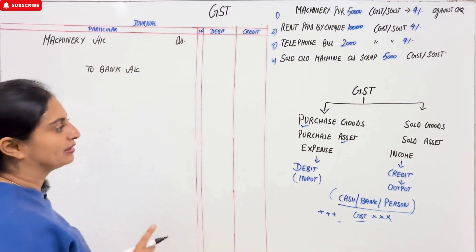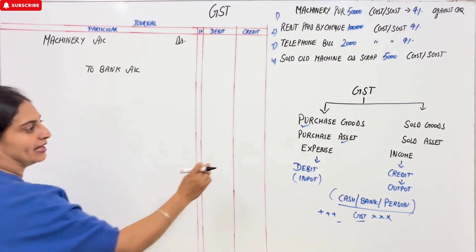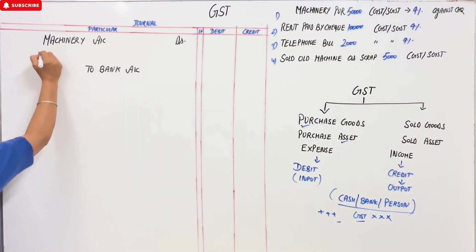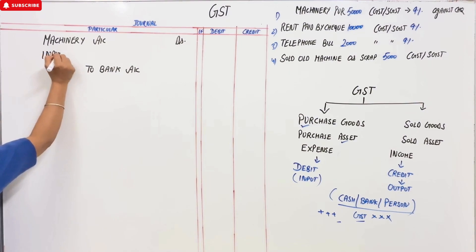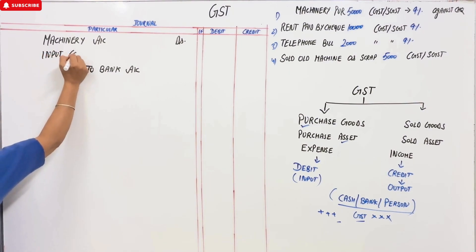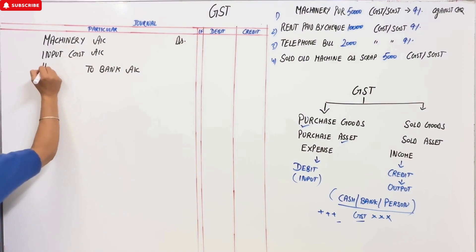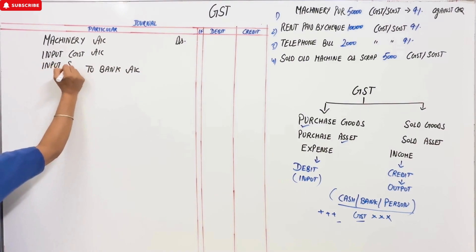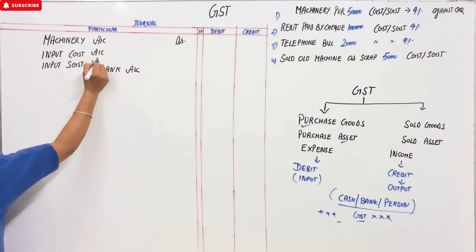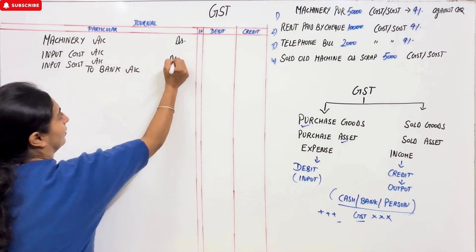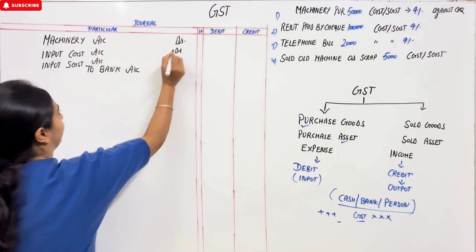Since it is a purchase, GST goes to input in debit. So we also write: Input CGST Account — Debit, and Input SGST Account — Debit. The complete entry is: Machinery Account Debit, Input CGST Account Debit, Input SGST Account Debit — To Bank Account.